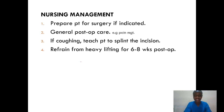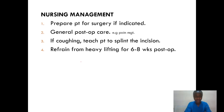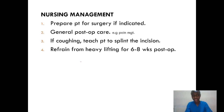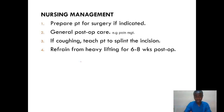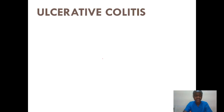For nursing management: first, prepare the patient for surgery if indicated, depending on the type of hernia. Second, perform general post-operative care including pain management and health education. Third, if the patient is coughing, teach them how to splint the incision — how to hold the incision site while coughing. Also, instruct the patient to refrain from heavy lifting for around six to eight weeks post-op, to avoid rupturing the incision site or causing another hernia.